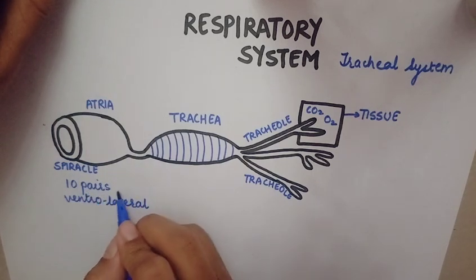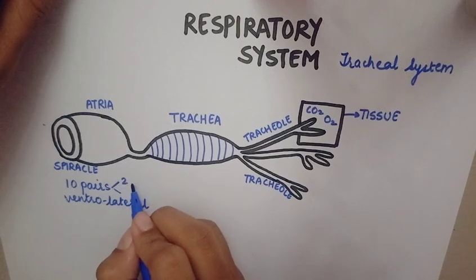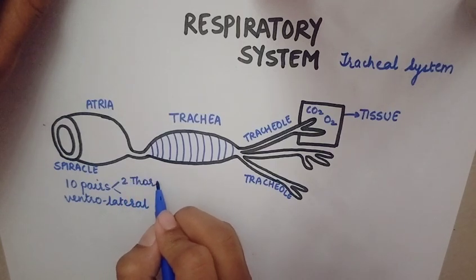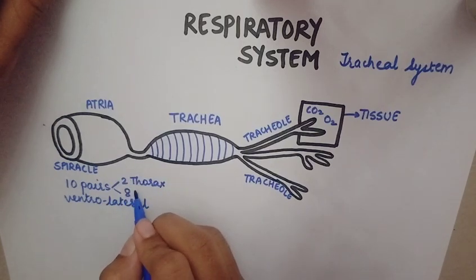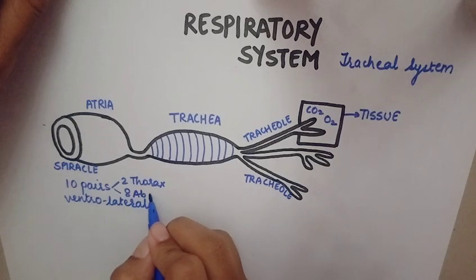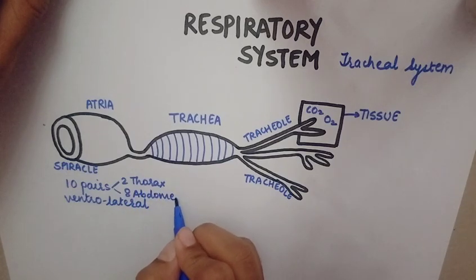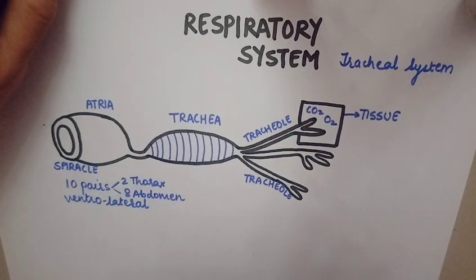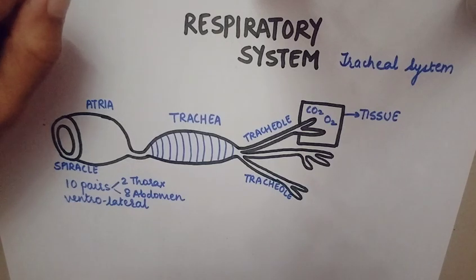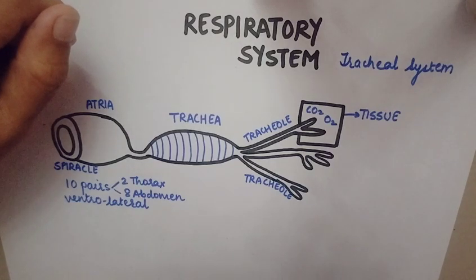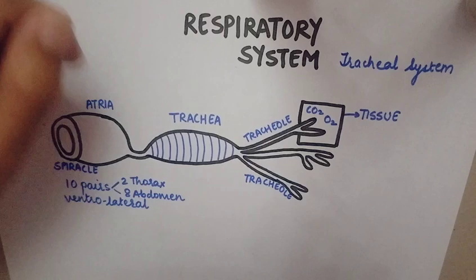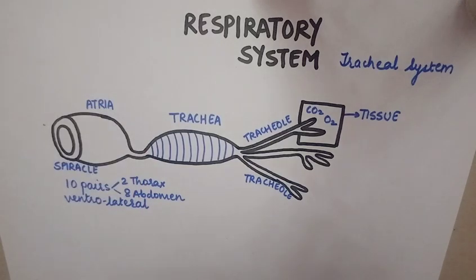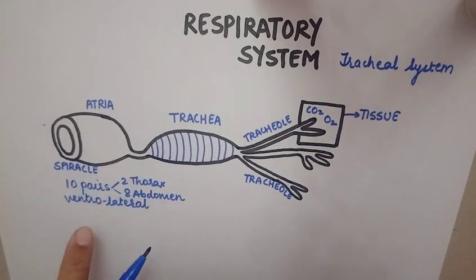Of these 10 pairs, there are 2 pairs in the thorax and the remaining 8 are in the abdomen. So spiracles are 10 pairs: 2 in the thorax and 8 in the abdomen, present on the ventrolateral surface of the body of the cockroach.